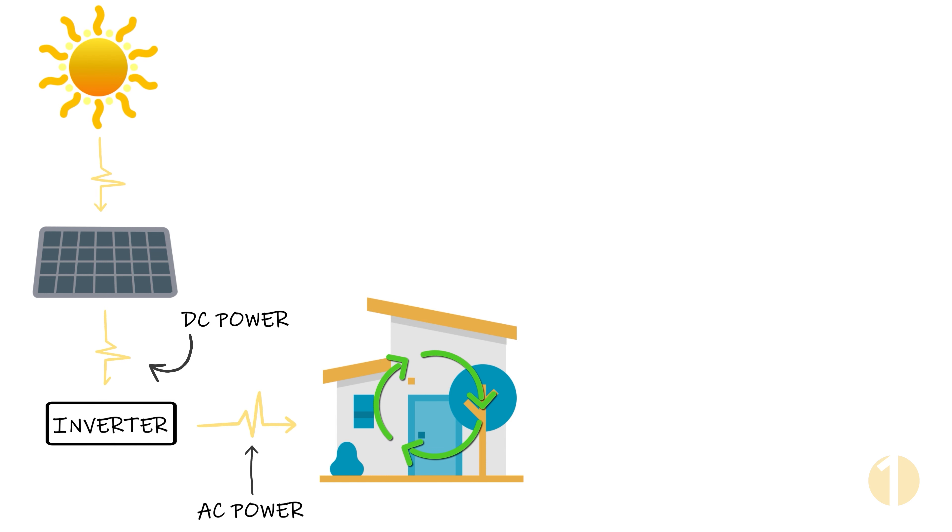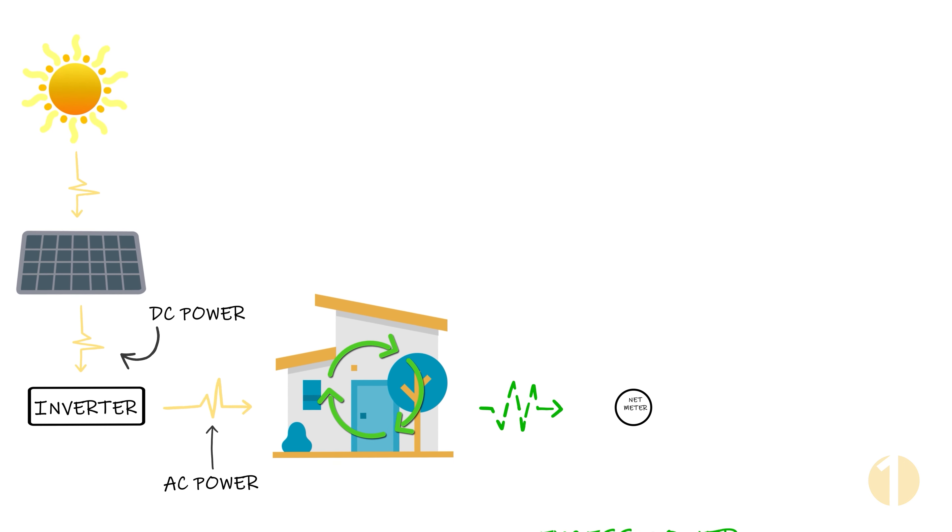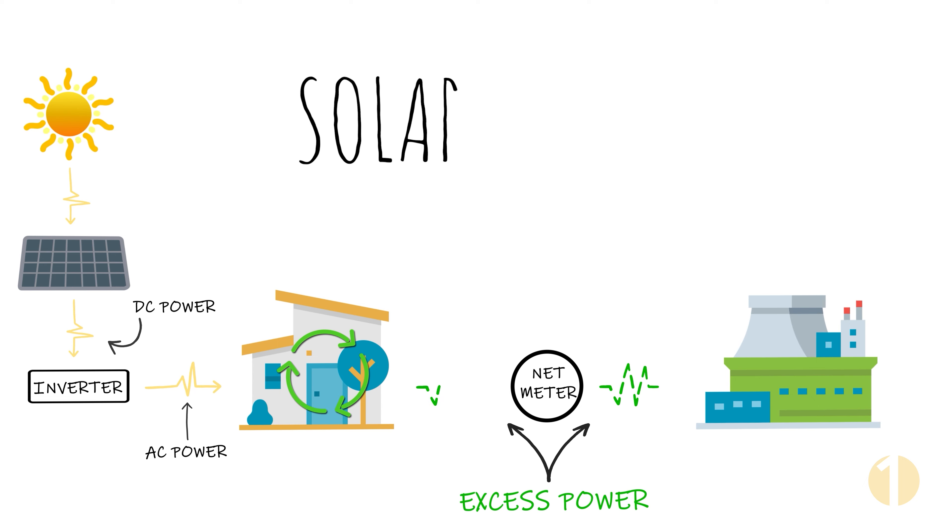And as your panels are producing power, your house uses that power up. The best part is, if you produce more power than your house is using, that power is then sent to the power grid, which your net meter stores as credits.